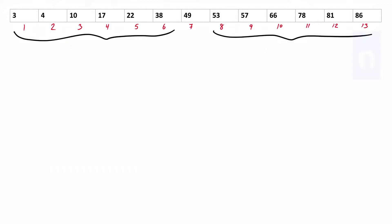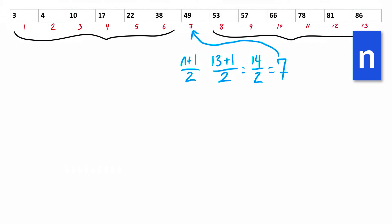The strategy is to look at the median position or the midpoint of the list of sorted values. For example, if n is the number of items that I have, what I can do is n plus 1 and then divide that by 2. So 13 plus 1 divided by 2 equals 14 divided by 2, which equals 7. So the 7th position is my median value — 49 in this case. But I'm actually going to be looking at the positions, not the values, throughout this video.